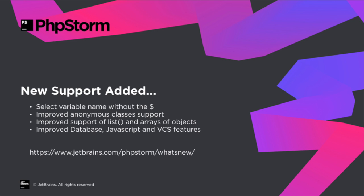We've improved anonymous classes support. Anonymous classes aren't something I've found a huge use for, but some people are using them for easy mocking in unit tests. We also have better understanding and support of arrays, particularly around arrays of objects and support for lists — we understand how arrays are built and assigned better now. When you do things like list assignments, you get better code completion after extracting arrays into variables, and better code completion around arrays of objects.